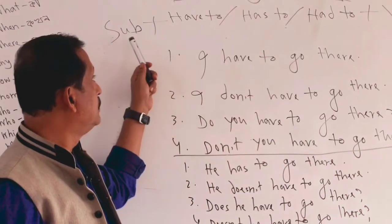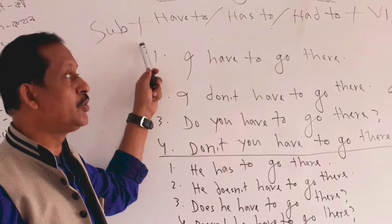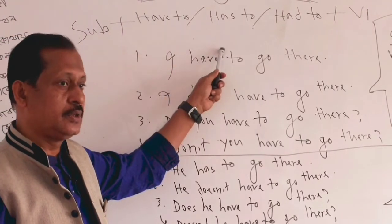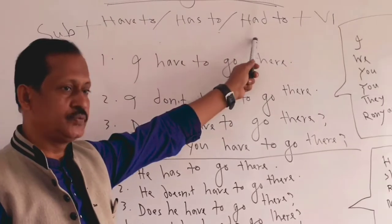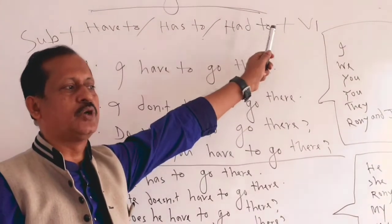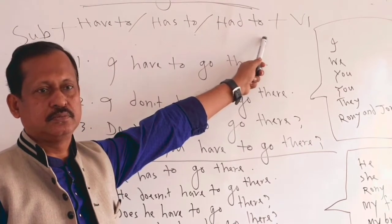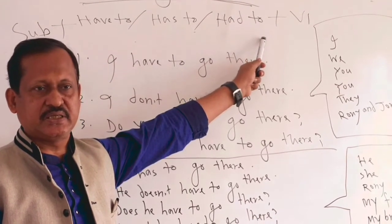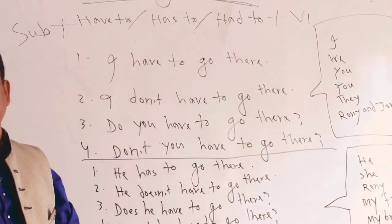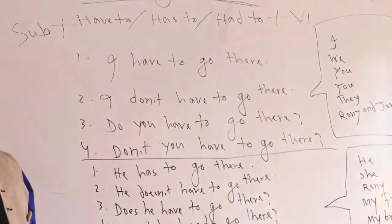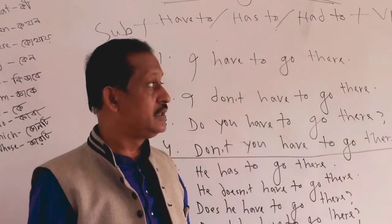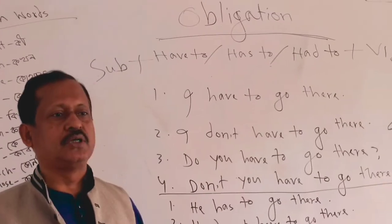Here, for a subject or person, we use 'have to.' For some persons we use 'has to,' and if it is in the past, we use 'had to.' For the verb, we need to think about verb form — that is verb one. The base form of the verb: we know a verb has three forms — present, past, past participle — also called verb one, verb two, verb three. In obligation, we use verb one.